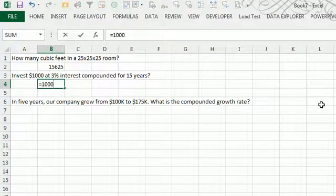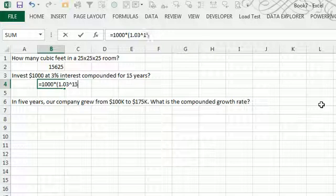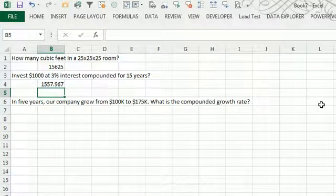Invest $1,000 at 3% interest compounded for 15 years, so 1,000 times 1.03 raised to the 15th power will give you that investment.